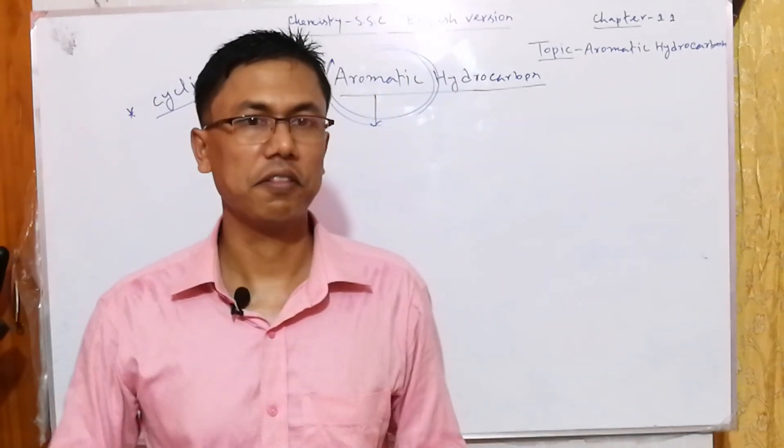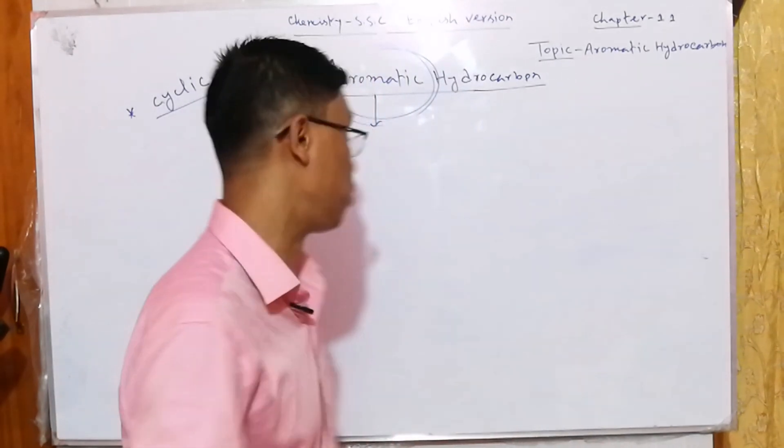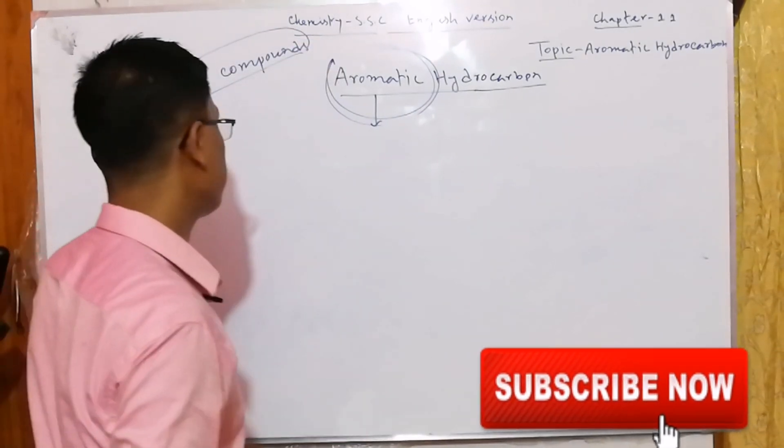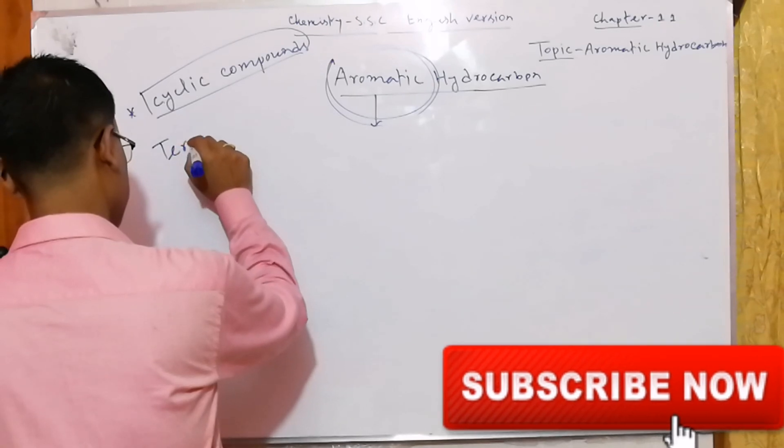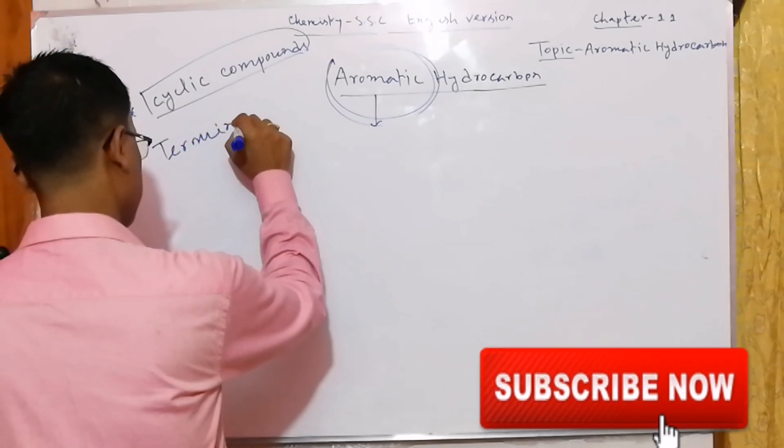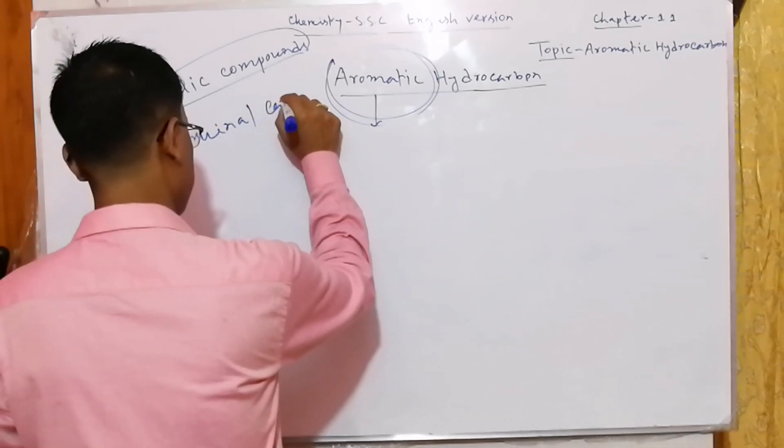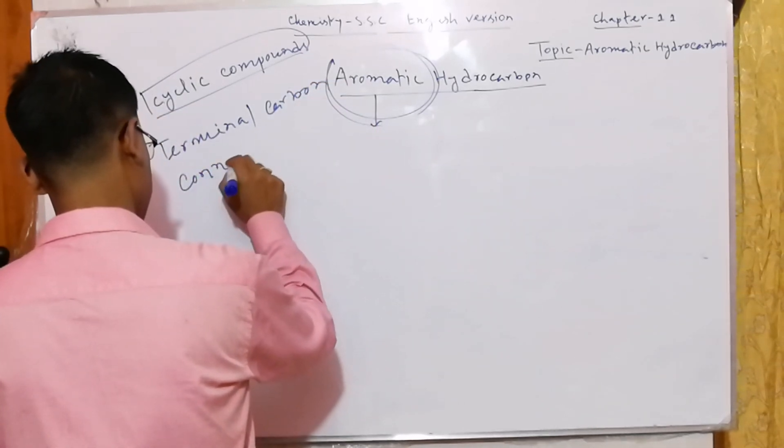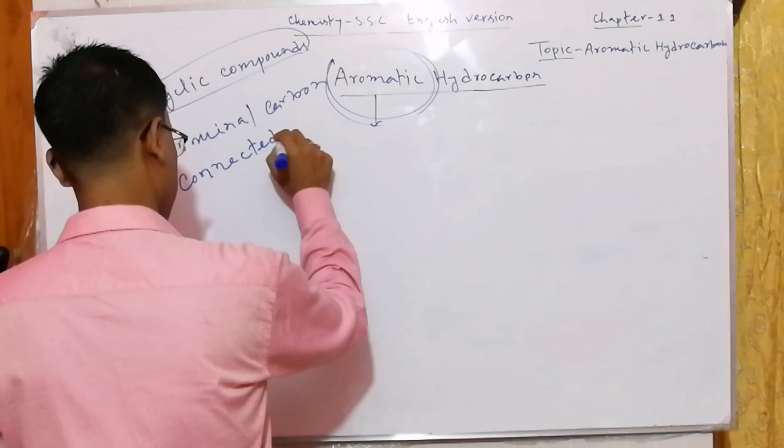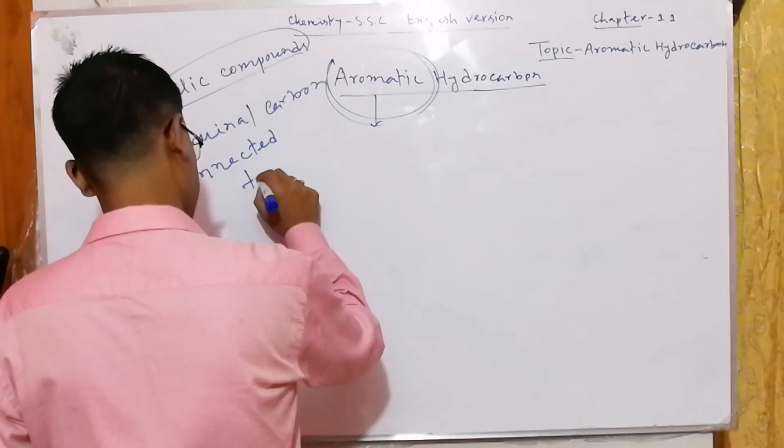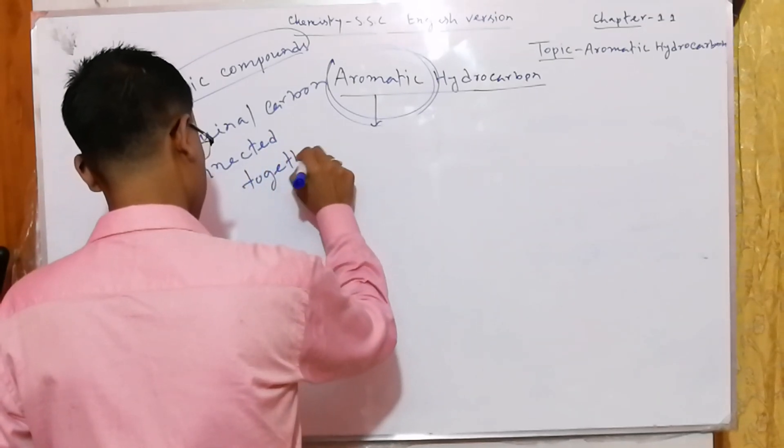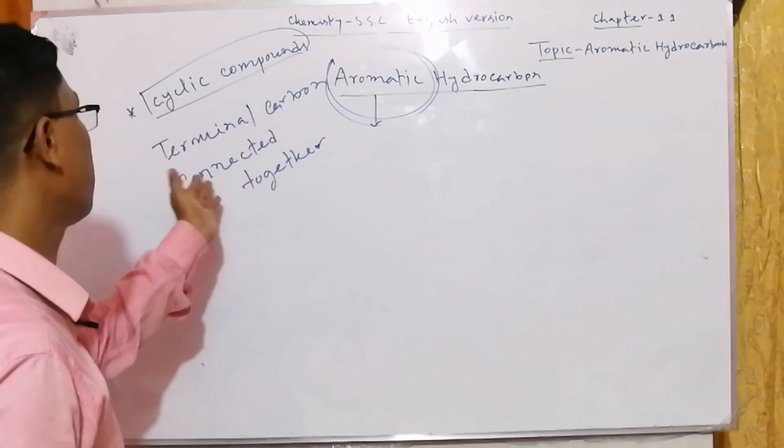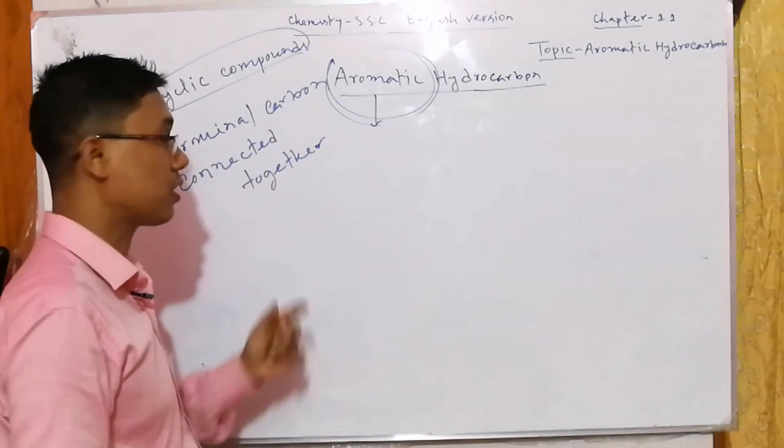One is that they have to be cyclic compounds. They have to be cyclic compounds, that means terminals carbon connected together and make a ring.